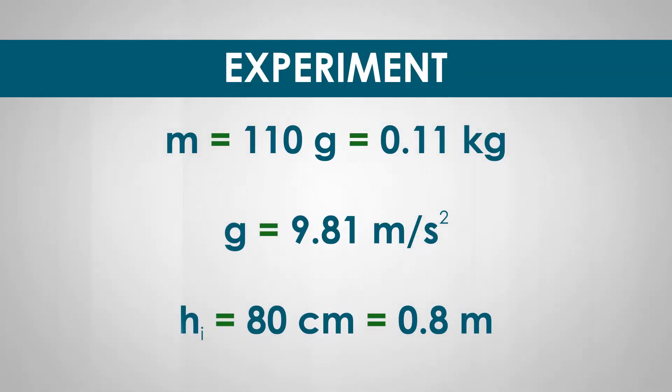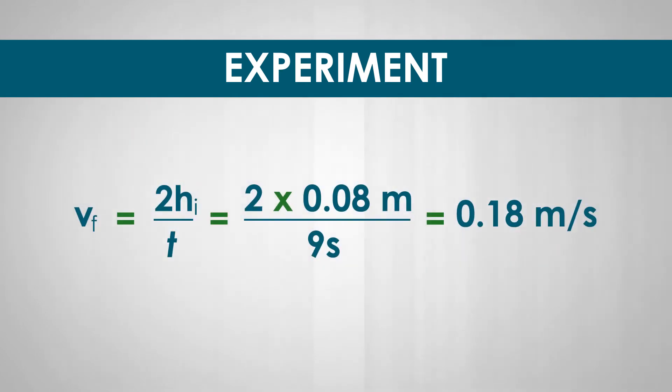In our experiment, hanging mass M equals 110 grams or 0.11 kilogram. G equals 9.81 meters per second squared. Initial height H is 80 centimeters or 0.8 meter. We can find out the final speed of the hanging mass from the initial height and time of the fall using V final equals 2H divided by the time of fall, T. The time of fall was 9 seconds.